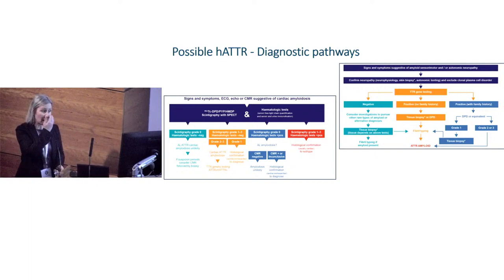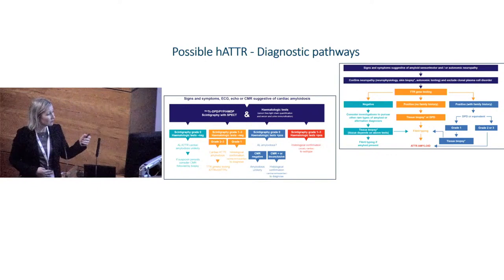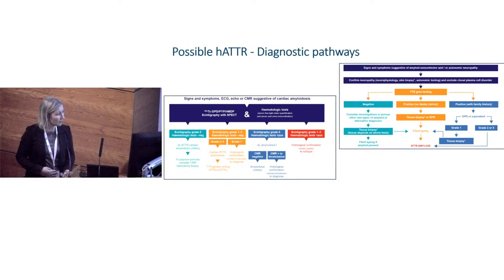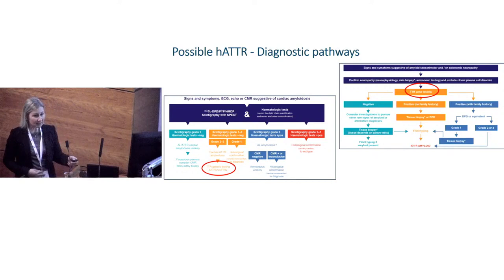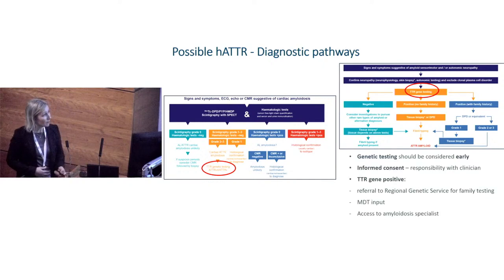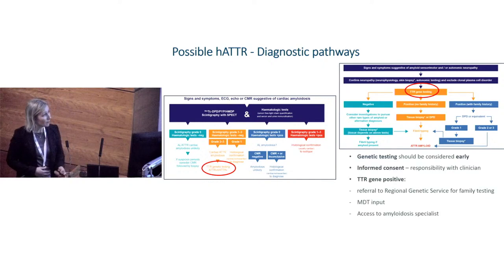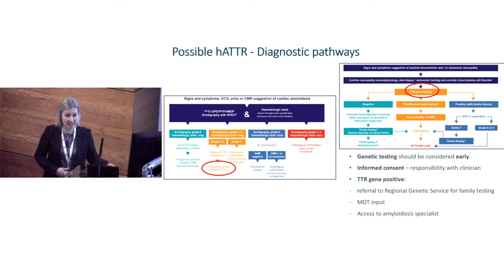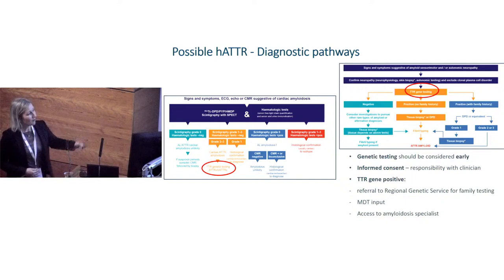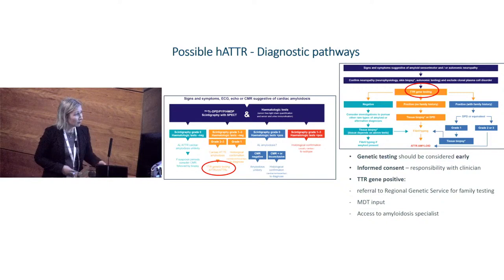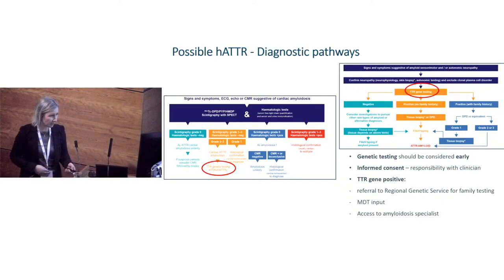There are diagnostic pathways here for suspected cardiac amyloidosis on the left or neurological amyloidosis on the right. Key points: genetic testing is recommended early in the diagnostic pathway, and informed consent lies with the responsibility of the person doing the test — I direct this to all the cardiologists. Those found to be TTR positive should be referred to a regional genetic centre, because every individual with a TTR gene variant has multiple family members that may be at risk. They should have input from an amyloidosis specialist and, if possible, multidisciplinary input.